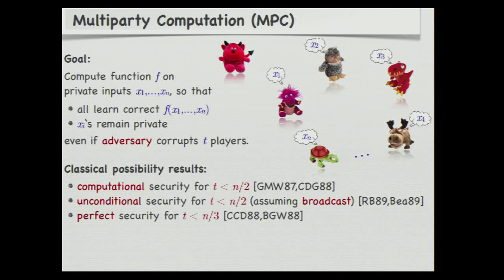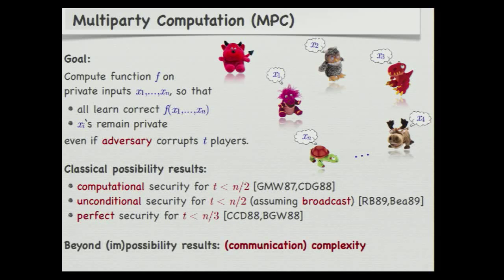I'm ignoring here the case of computational security and the dishonest majority, because there you cannot really get full robustness. Once we have these very nice possibility results, it's natural to ask what is the complexity of multi-party computing functions in the different settings.